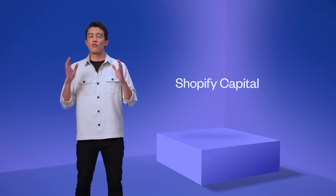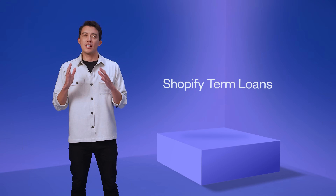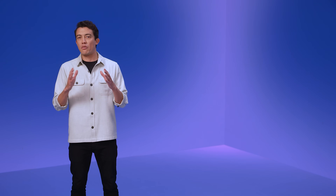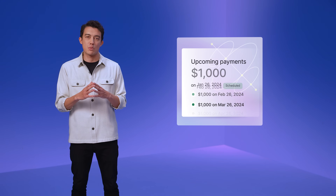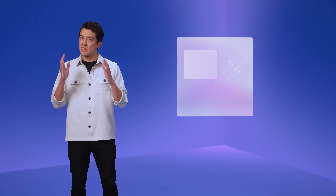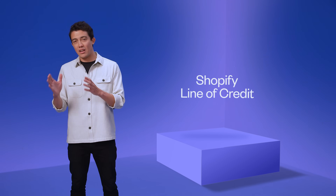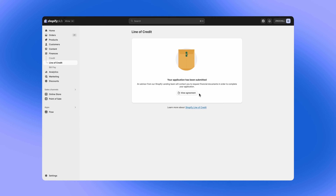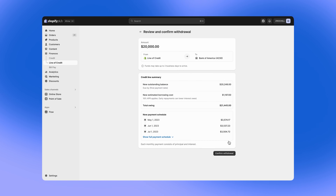Nothing is more foundational to a business than the balance sheet. That's why we've made some significant updates to the finance section. Shopify Capital has now been helping merchants thrive and grow for more than seven years, injecting over $5 billion of funding into businesses when they need it most. Shopify term loans are an iteration of our existing capital offering that provides a more customizable and predictable lending option for merchants looking for fixed payments over a fixed payback period. And starting this month, we're releasing Shopify Line of Credit, which provides flexible on-demand funding that merchants can draw upon whenever the need arises.